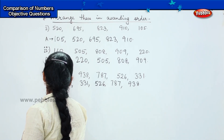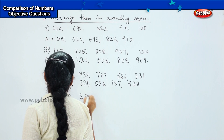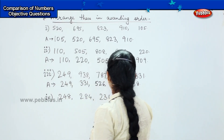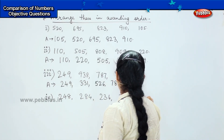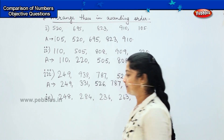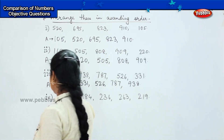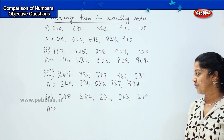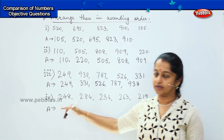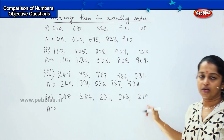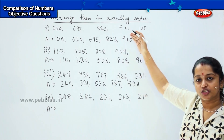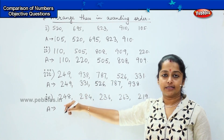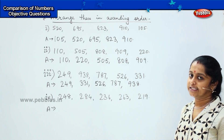Here is your next question: 248, 284, 236, 263, and 219. Now tell me the answer. In this one, all numbers are in the 200s. So you have to check the tens value, because here the difference is not in the hundreds place — the hundreds value is the same.